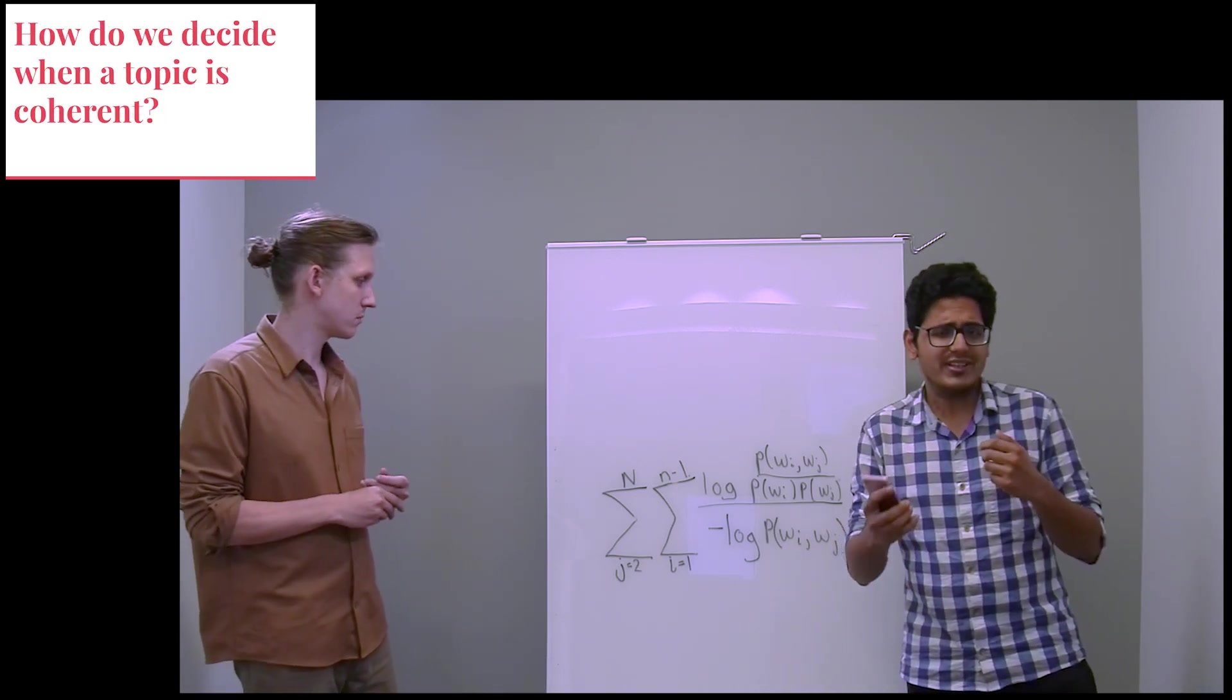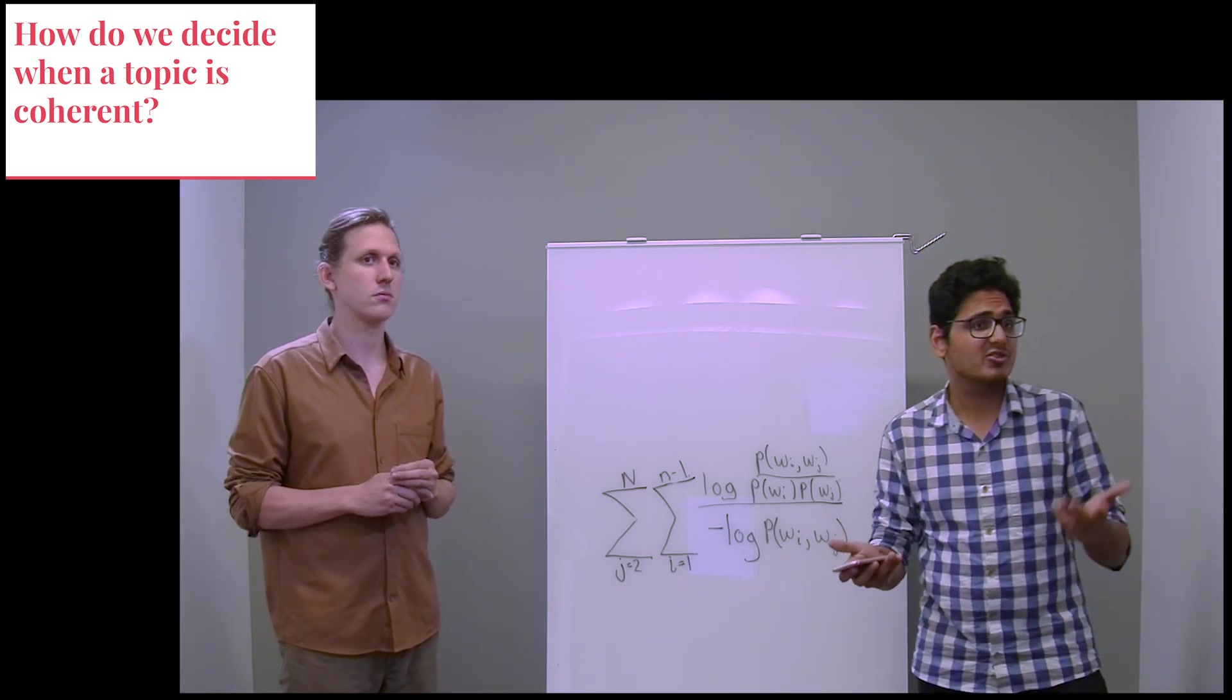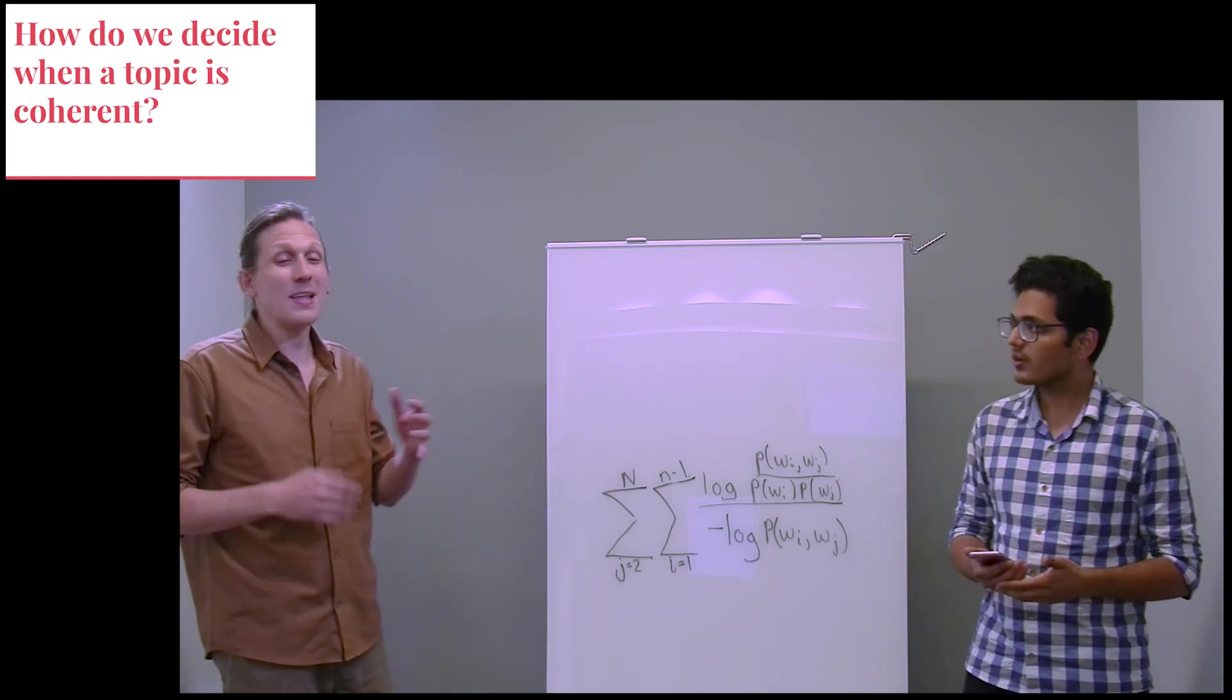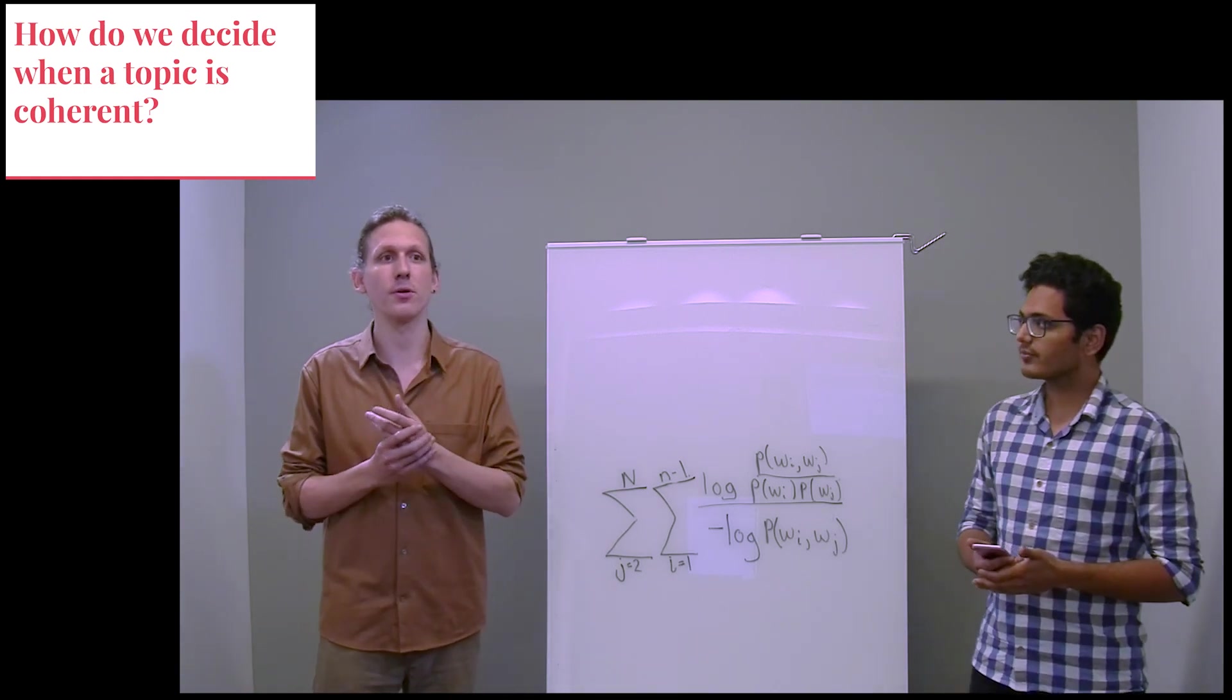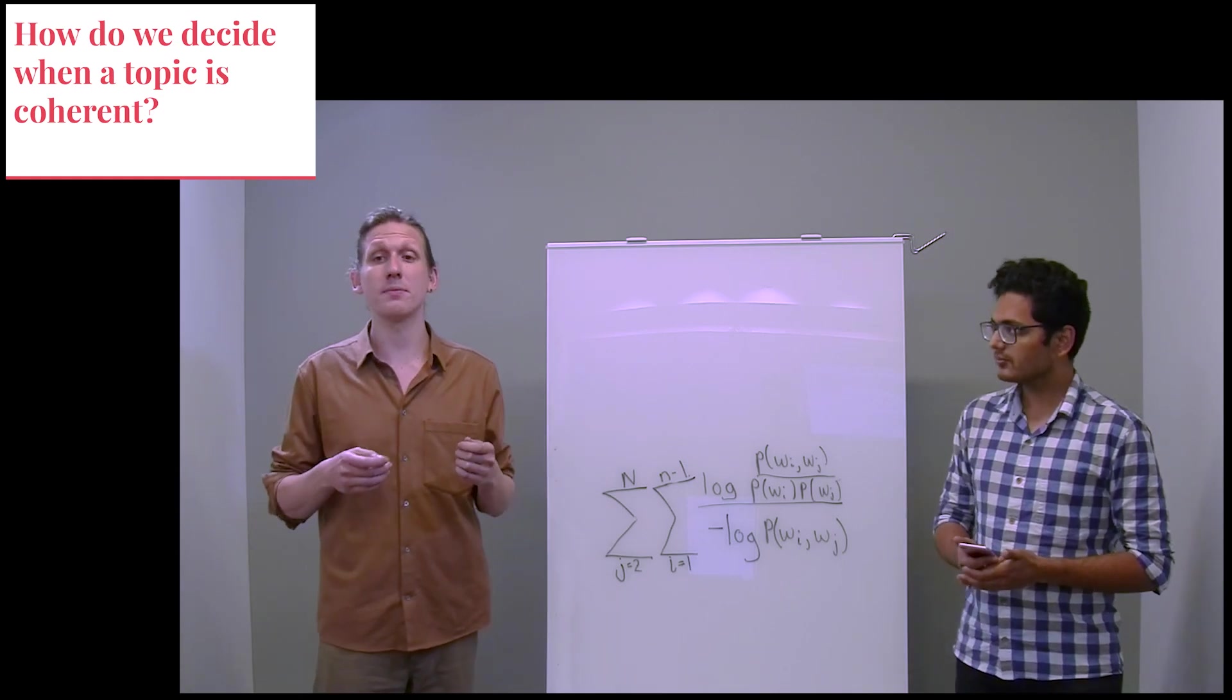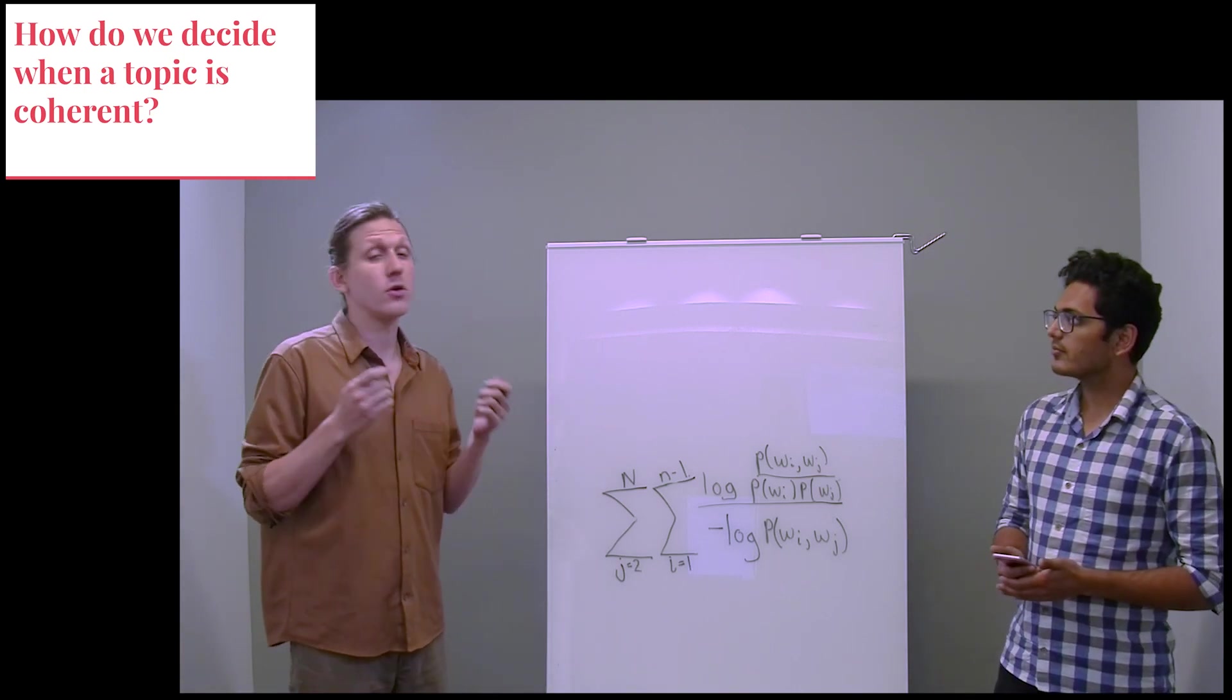And how do we decide when a topic is coherent? So the most straightforward answer to that question is a topic is coherent when the user says it's coherent. But evaluating the outputs of each model by hand like that, it's time-consuming and it's non-reproducible. If I'm trying out different hyperparameters and different model types, maybe I want a number that can show me how good my topics are. This is where automated coherence comes in.